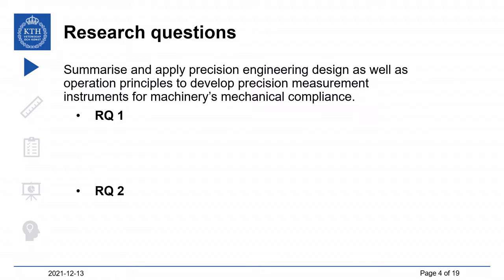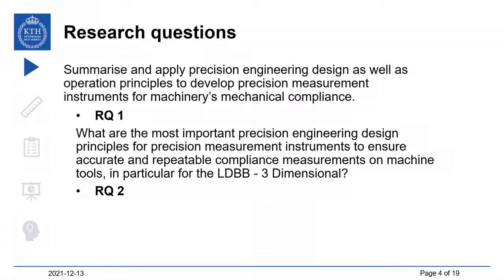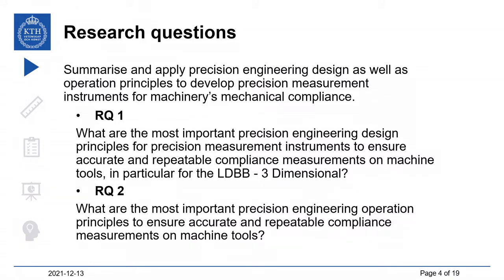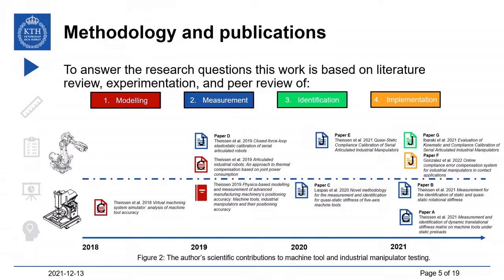Research questions. This work summarizes and applies precision engineering design as well as operation principles to develop precision measurement instruments for machinery's mechanical compliance. The first research question is: what are the most important precision engineering design principles for precision measurement instruments to ensure accurate and repeatable compliance measurements on machine tools? Both research questions relate to the pragmatic question of how accurately one can experimentally measure Cartesian stiffness. To answer these questions, this work is based on literature review, experimentation, and peer review of engineering as well as scientific contributions.